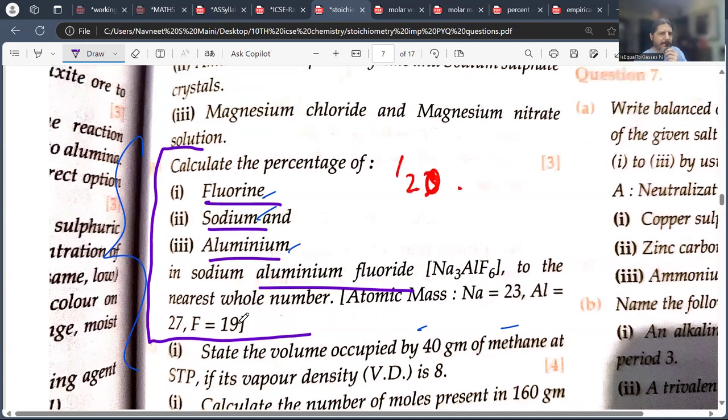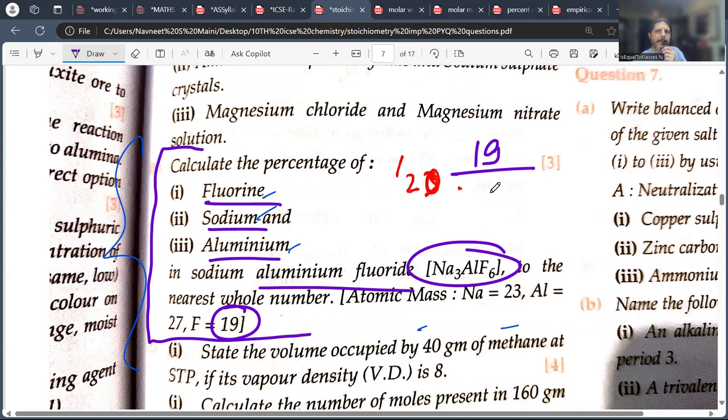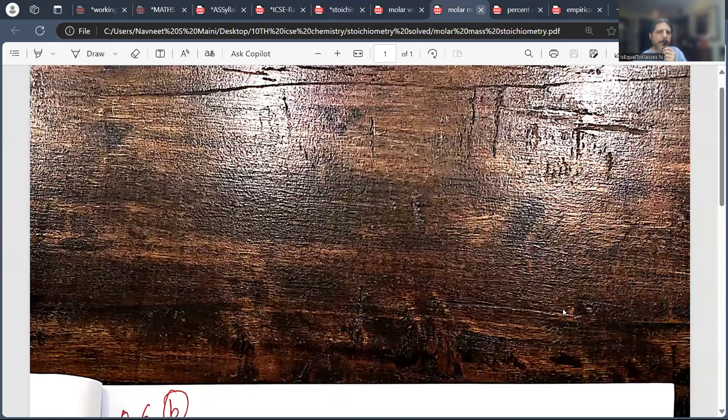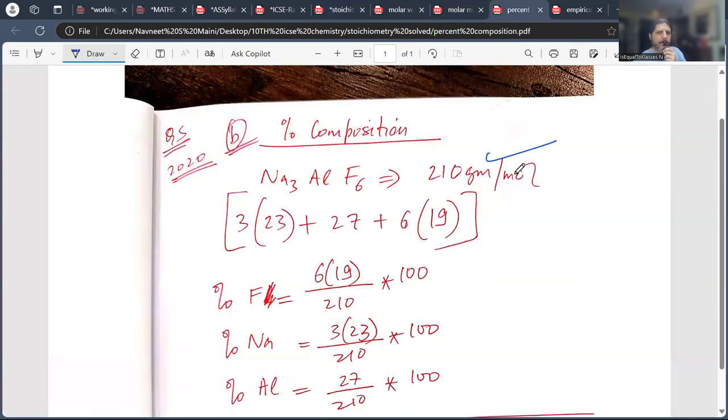The fluorine will give you everything. Like fluorine, it's 19. Divide by molar mass of Na3AlF6. Okay? So you will take that molar mass. And the answer will be 210 gram per mole.